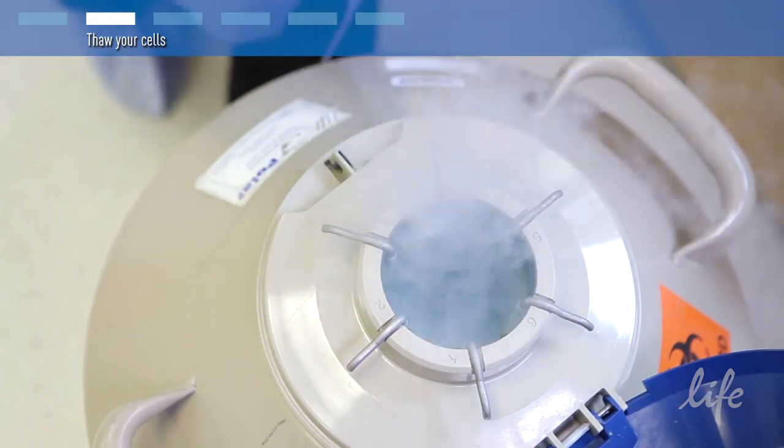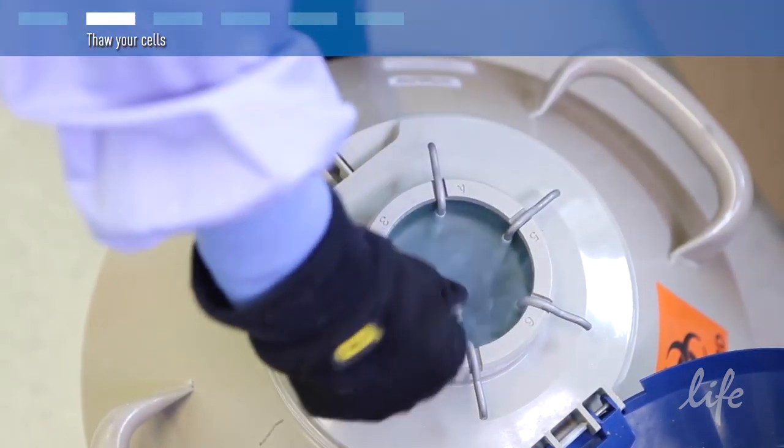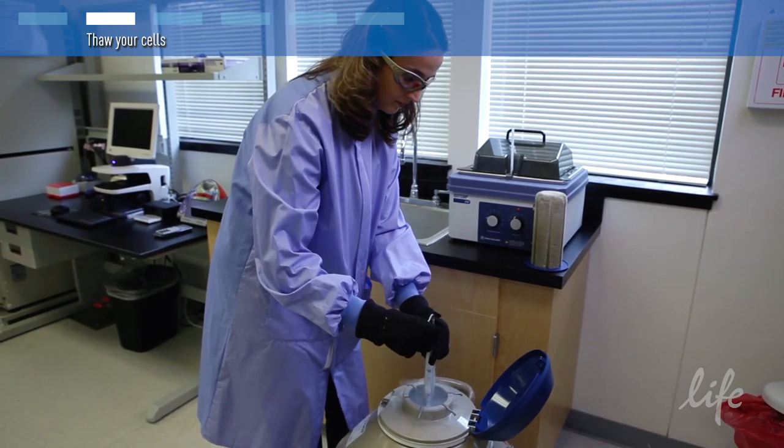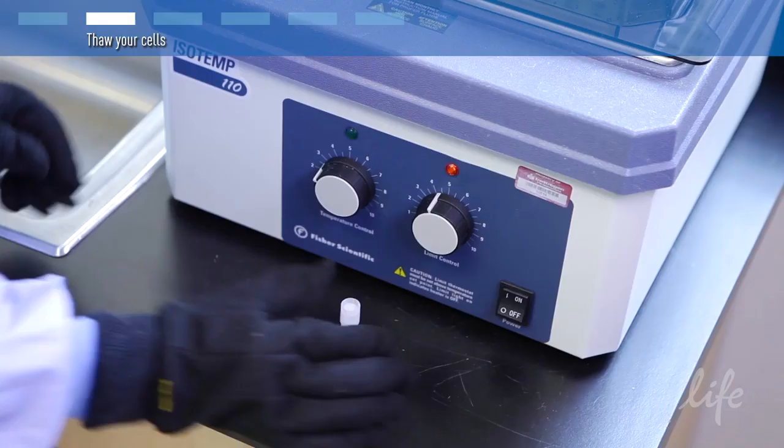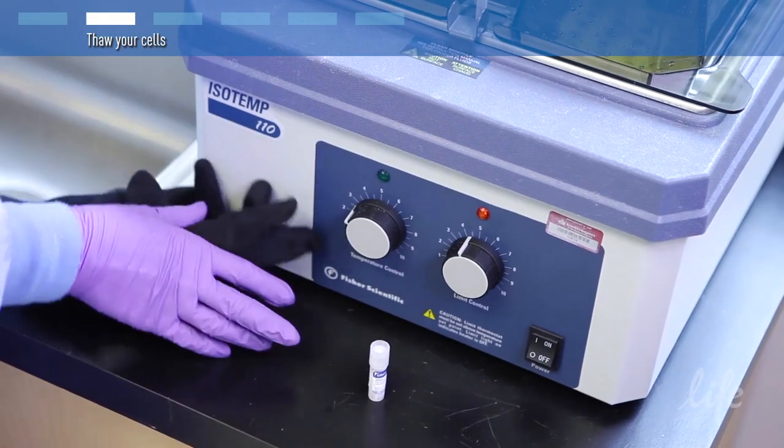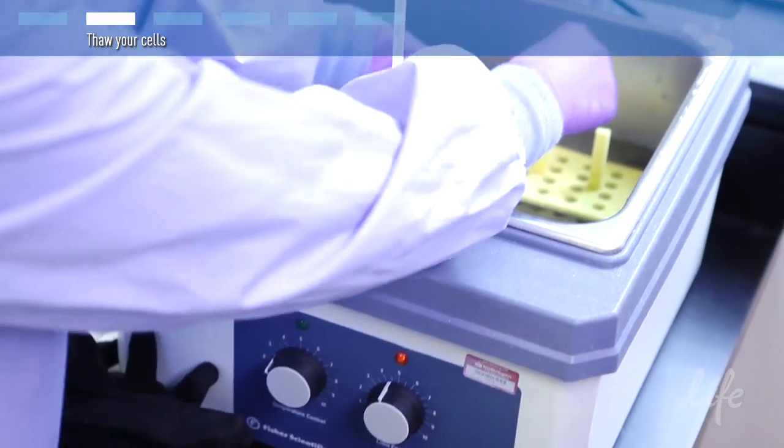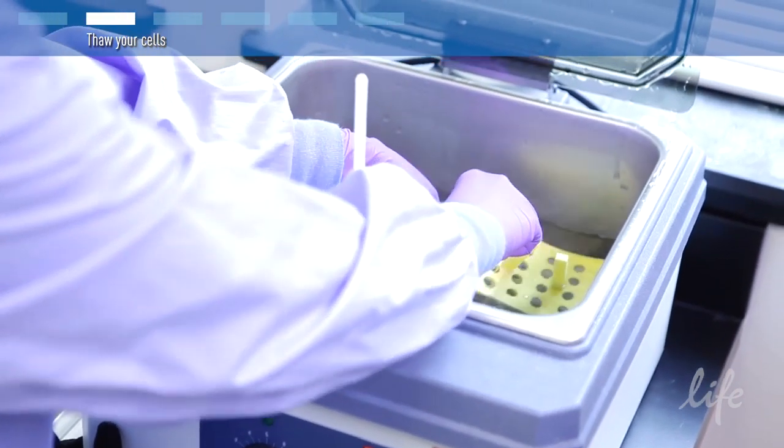Protect your hands and eyes when you pick up the cell vial from the storage tank. Promptly place the frozen cryovial into a 37°C water bath and submerge the lower half of the vial for about two to three minutes to thaw the cells.